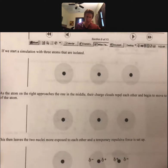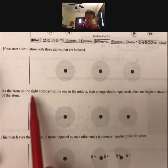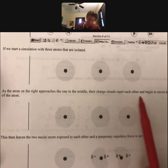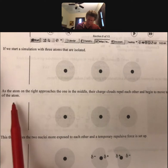If we start a simulation with three atoms that are isolated, one, two, three. As the atom on the right approaches the one in the middle, their charge clouds repel each other and begin to move to the opposite sides of the atom.